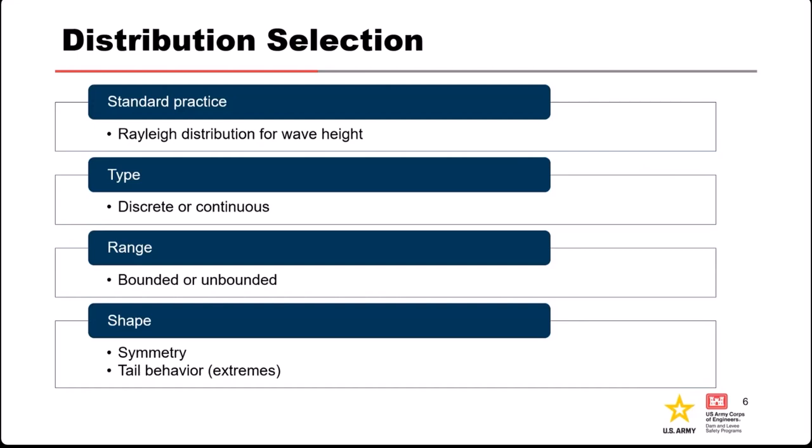There are different variations of some distributions. Shape, symmetry, and tail behavior also matter. If you're interested in extreme events—say, in dam and levee safety, where we care about extreme floods and earthquakes—what's happening way out in the tails of the distribution might be the important thing for a risk analysis. Different distributions may look similar in the center but look vastly different in the extremes or tails. So there may be reasons to lean toward one distribution because its tail behavior is more consistent with what you're trying to model.